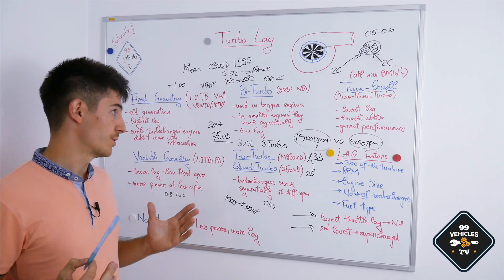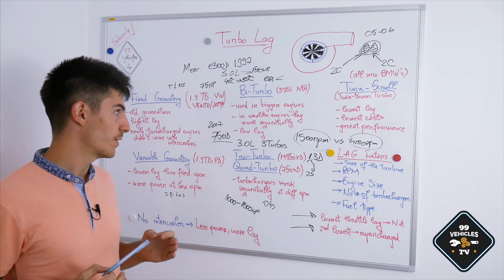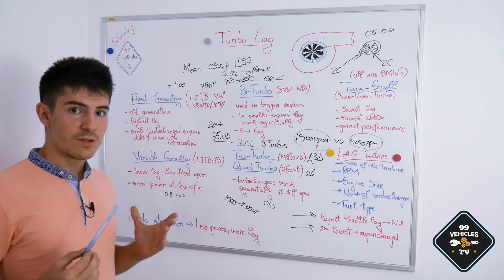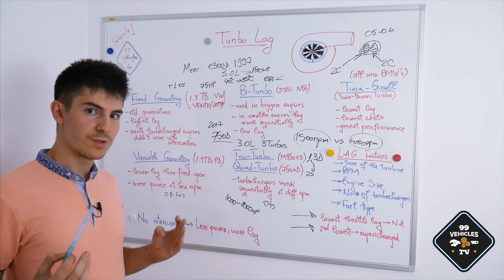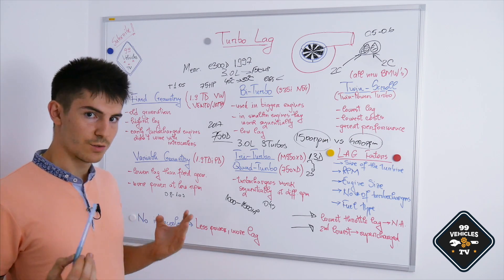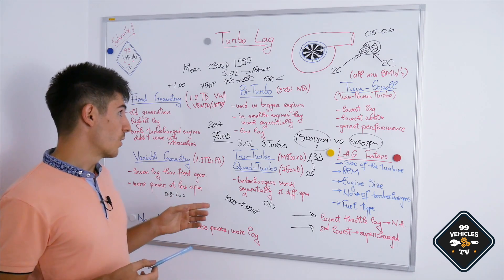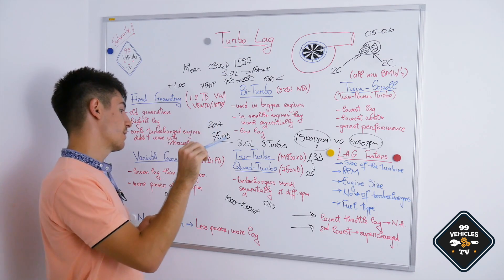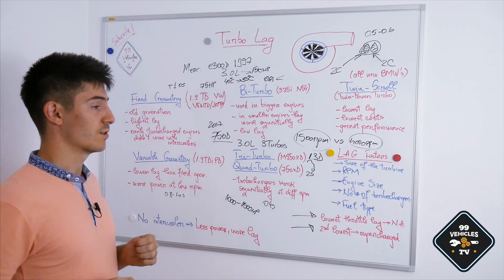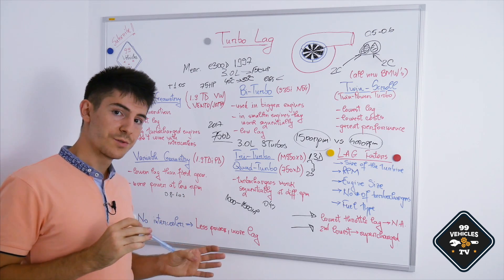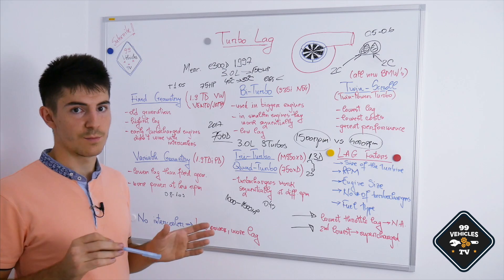Bi-turbo engines use two identical turbochargers to reduce lag and also to have more power. Sometimes it's not wise to use a huge turbine. In my opinion, it's even better to use two smaller identical turbochargers to achieve the best results. In smaller engines or in twin turbo engines, as I mentioned earlier, there is a smaller turbocharger and a bigger turbocharger and it works sequentially at different RPM ranges.